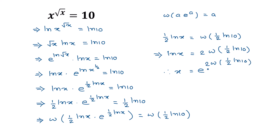This is the closed-form solution for x, and the approximate value of x is equal to 3.45. This is the solution to our given equation. If you like this video, please subscribe to my channel. Thanks for watching.